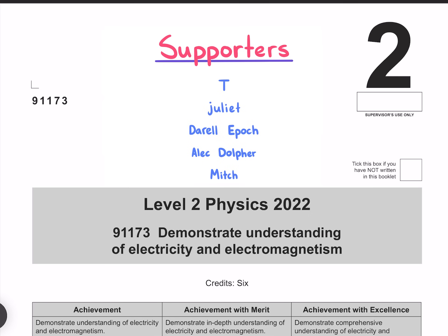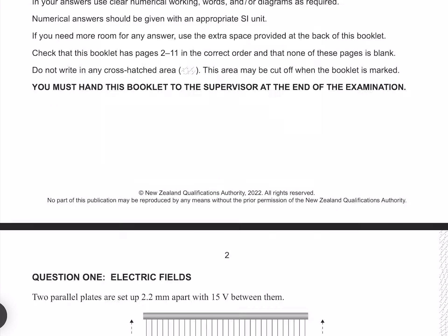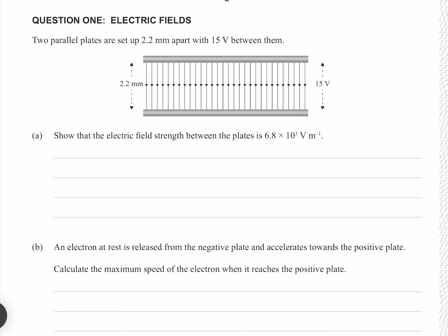In this video I'll be going through the 2022 electricity and electromagnetism paper. Question 1. Two parallel plates are set up 2.2mm apart, with 15 volts between them. Show that the electric field strength between the plates is 6.8 × 10³ volts per meter.